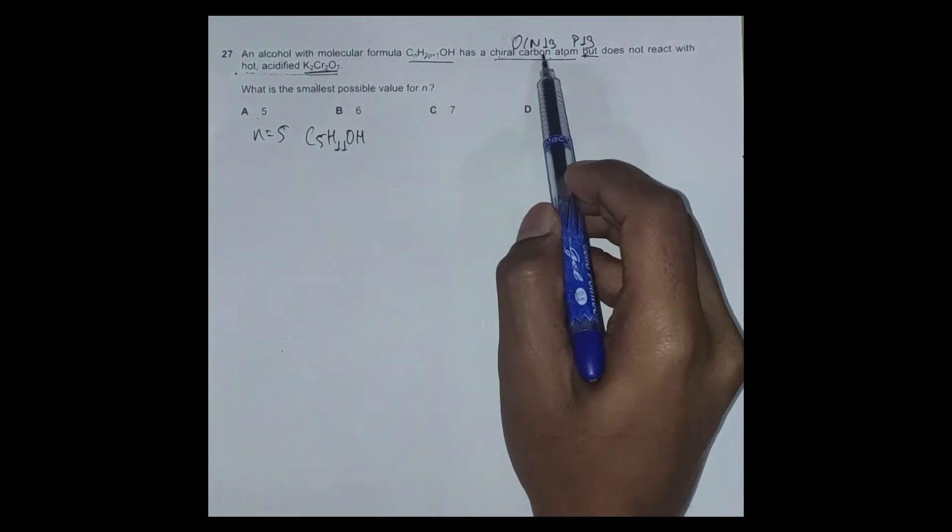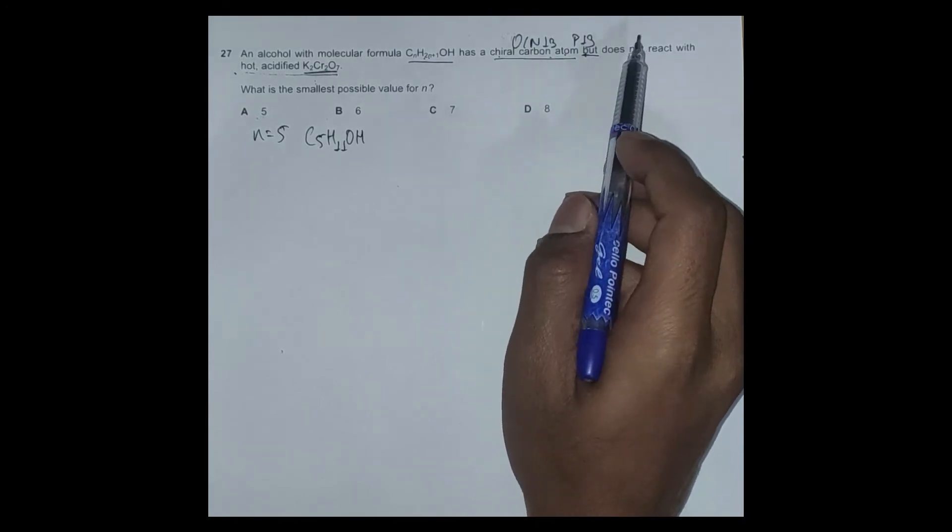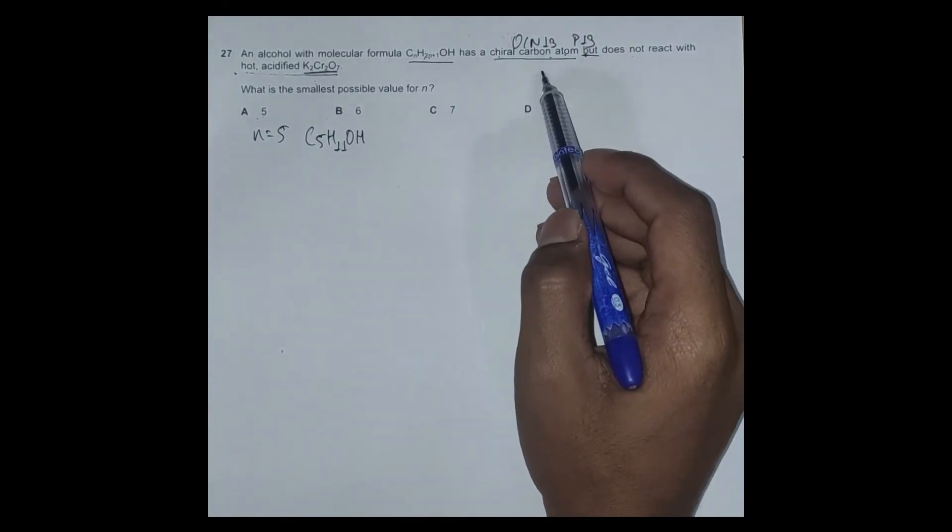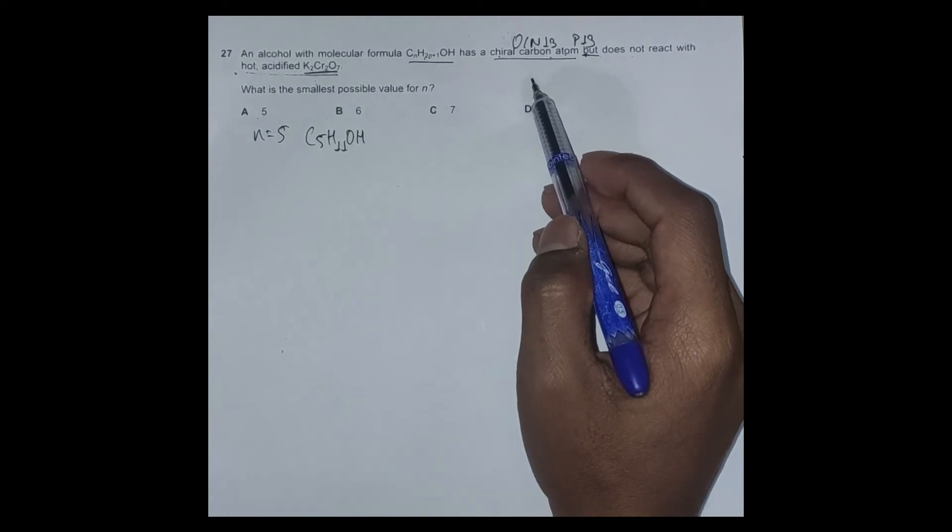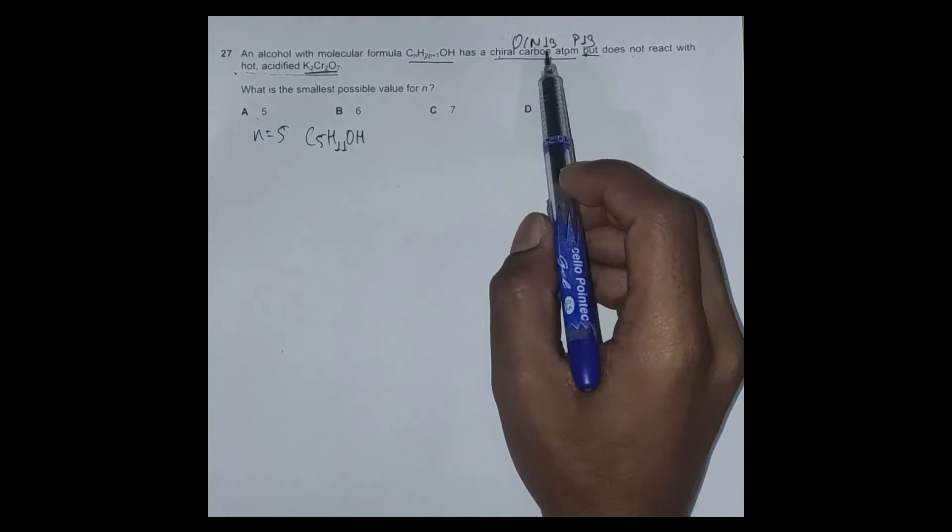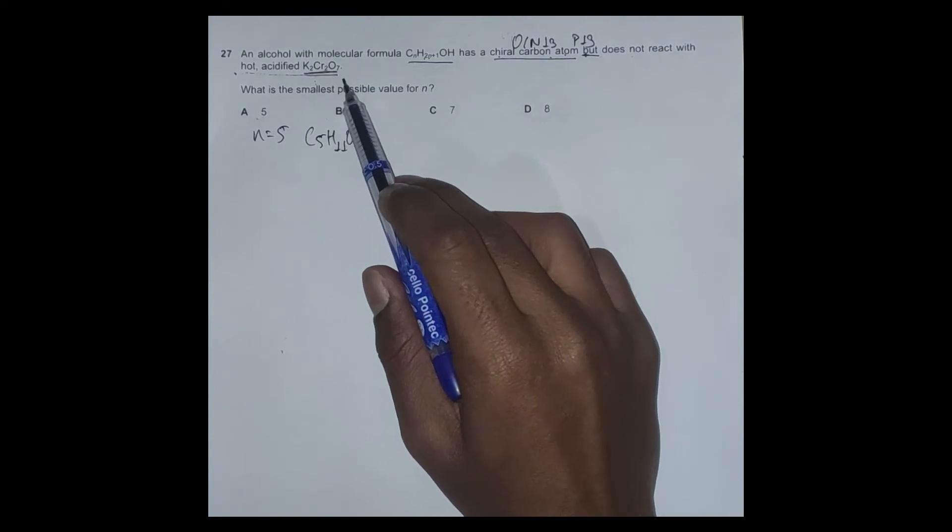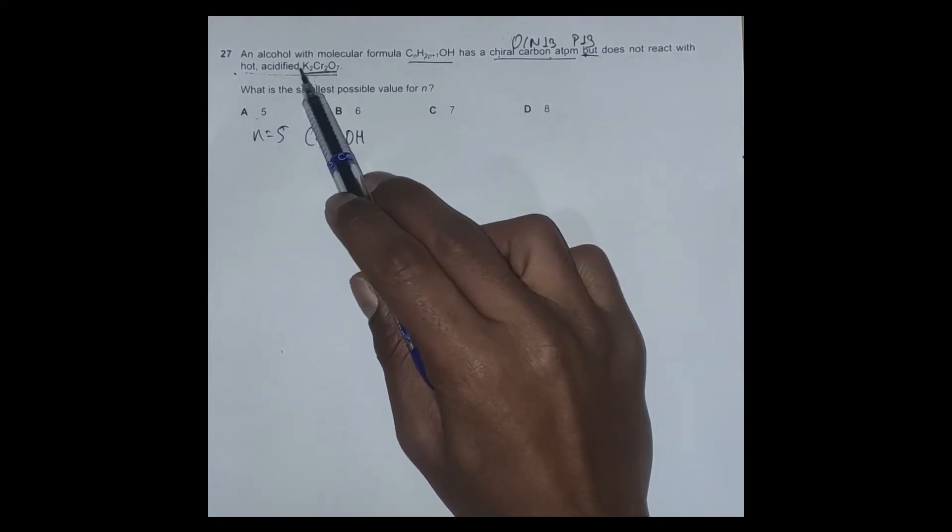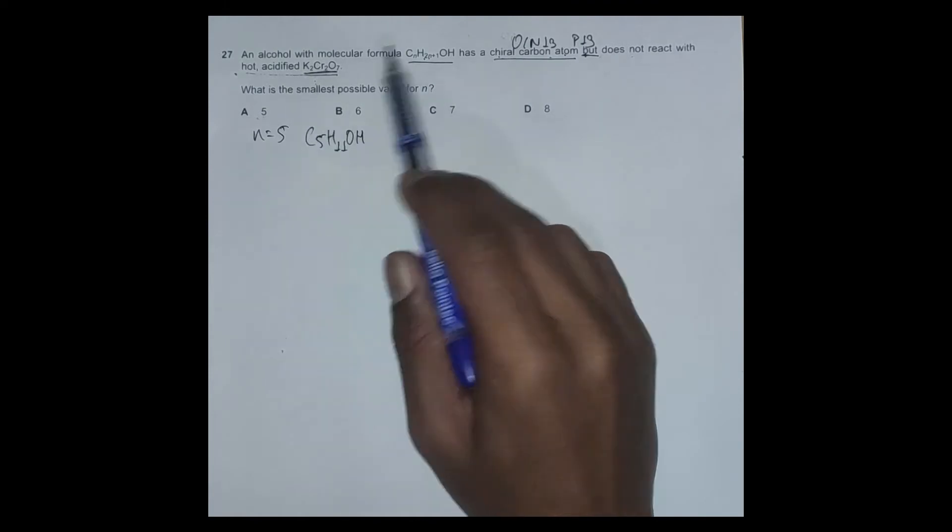First of all, has a chiral carbon atom. To have a chiral carbon atom in this case, we need to have branching because we also have tertiary alcohol. We need tertiary alcohol, so requirement of tertiary alcohol requires branching, and we also have a chiral carbon.